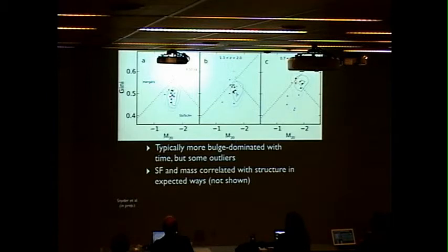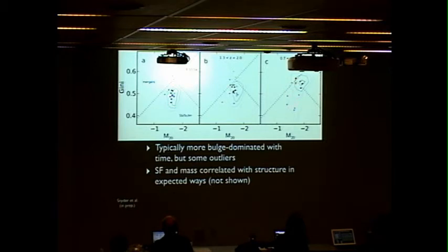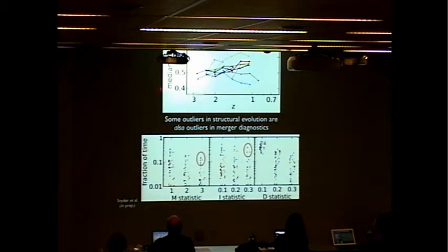My own work on this has been to calculate morphology catalogs from this set of simulations to understand how certain things would be observed. Galaxies become more bulge-dominated with time — time goes up to the left in this diagram, with redshift two on the left and redshift one on the right. At redshift two they're primarily in the late-type area, and they move smoothly up on average toward early-type galaxies in the upper right. However, there are some outliers — the gray and blue points — that don't take that particular track and may even move toward the diskier region of the diagram.